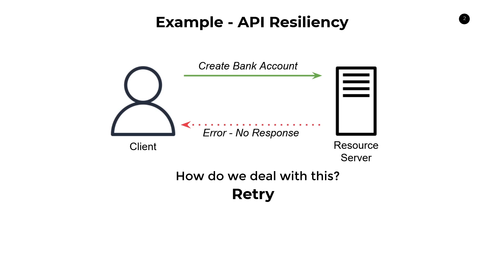But there's a problem. We want to retry this operation, but how do we know when we retry that the original request to create that bank account didn't actually succeed on the back end? Maybe it stored the bank account in its database and called its dependencies, but there was a network connection issue and it never returned a response despite having internally succeeded. Now if we retry and call 'create bank account' again after we got no response, we're going to potentially have two different bank accounts.